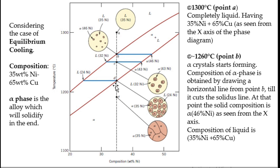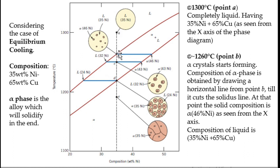We are studying the 35 percent nickel composition. At point A, 1300°C, everything is liquid: 35% nickel and 65% copper. As cooling progresses it reaches point B at the liquidus line, where alpha crystals start forming.